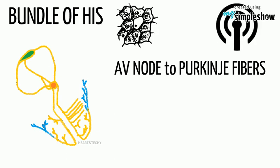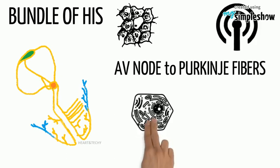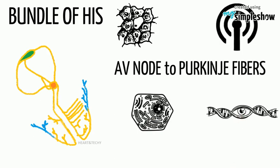The left bundle branch conducts the impulse to the Purkinje fibers of the left ventricle. The Purkinje fibers are a network of specialized cells that are abundant with glycogen and have extensive gap junctions, enabling them to rapidly transmit cardiac action potentials.